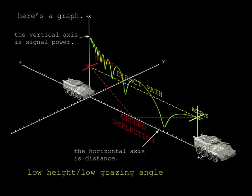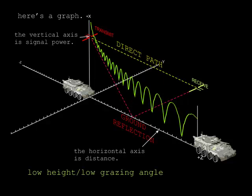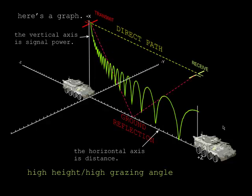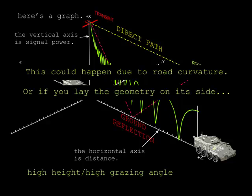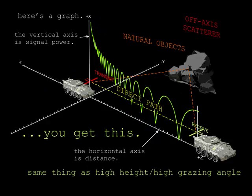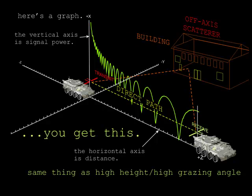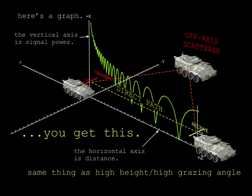If we raise the transmitter and antenna heights, the pattern of power versus range changes — these peaks and nulls get closer and closer together. This can happen due to road curvature. Alternatively, if we have a low grazing angle in the forward direction but a bright scatterer off axis, the grazing angle can become quite high, producing a similar pattern of closely spaced peaks and nulls — such as from a natural object, a house, a building, or perhaps another vehicle.